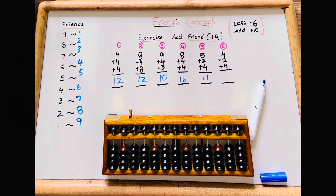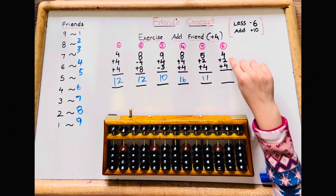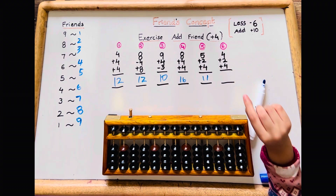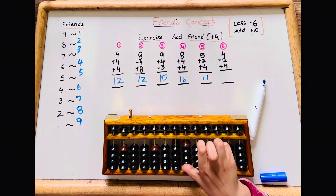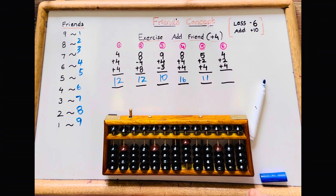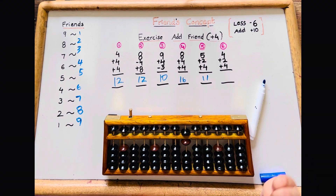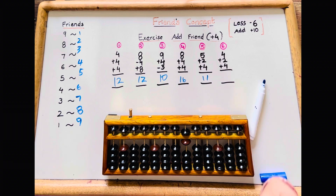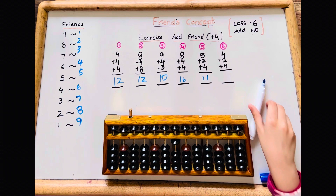Let's do the sixth sum: 4 plus 2 plus 4. 4 plus 2 — there's no plus 2, so minus 3 add 5. Then 10 add 4 — there's no add 4, so minus 6 add 10. The answer is 10.